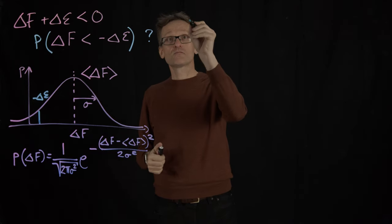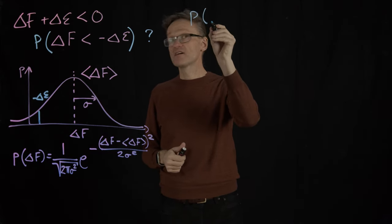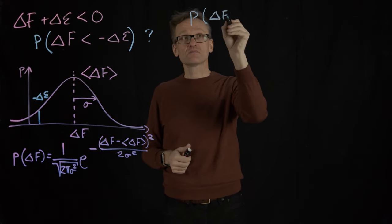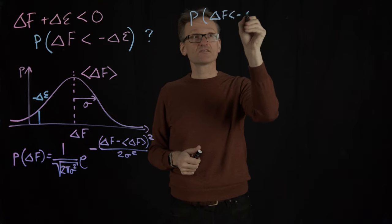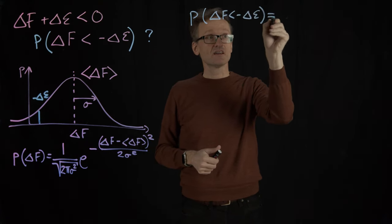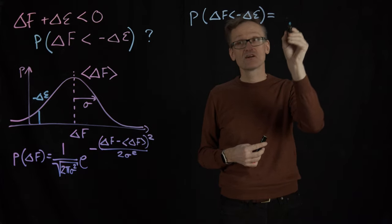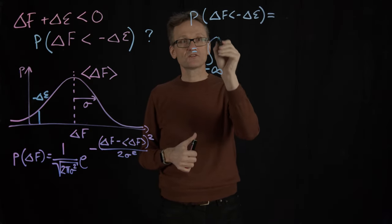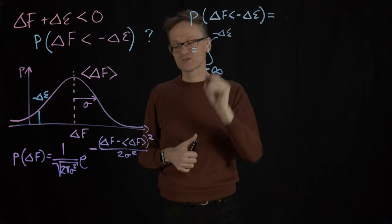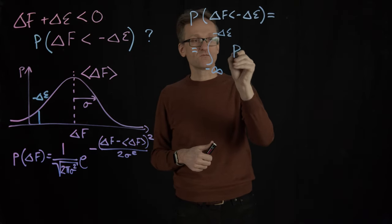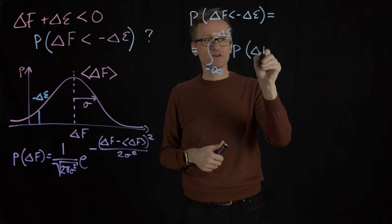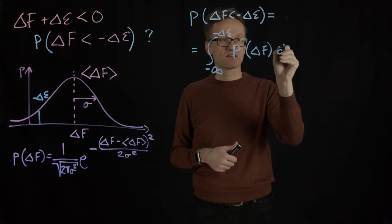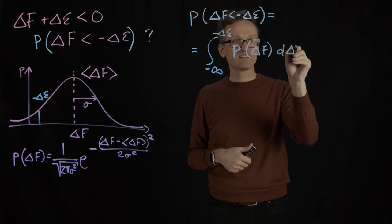So the probability of delta F being smaller than minus delta epsilon equals the integral from minus infinity to minus delta epsilon of p as a function of delta f, d delta f.